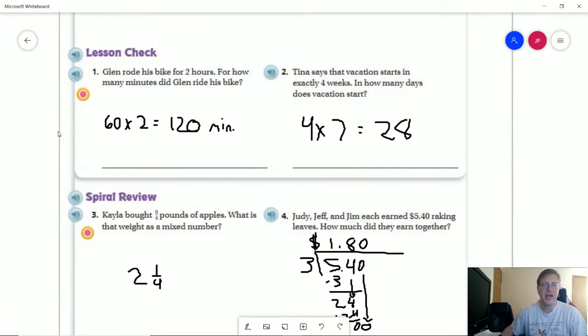So moving on to number one on the back. If we ride for two hours, we can multiply that by 60 minutes to get 120 minutes. For number two, I forgot to put the unit of measurement here. We're converting to days. And so we can do four times seven. So four weeks times seven days in a week gives us 28 days.